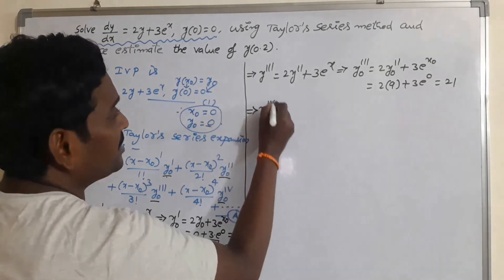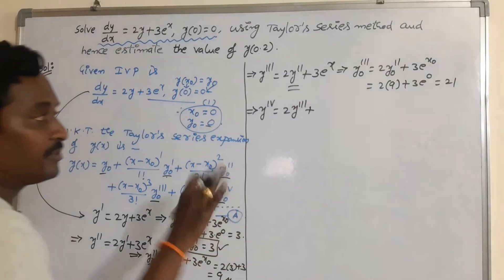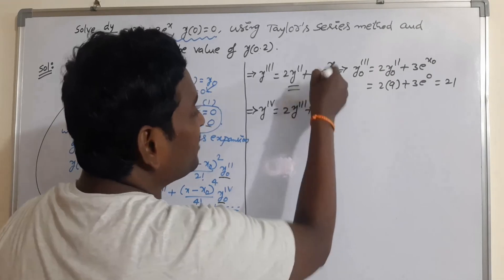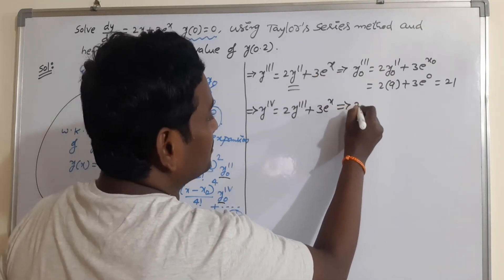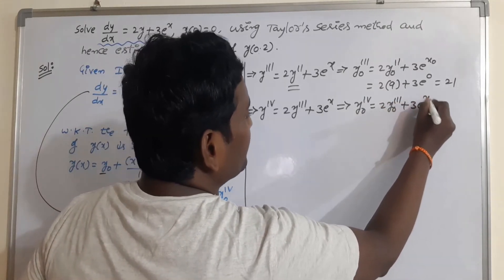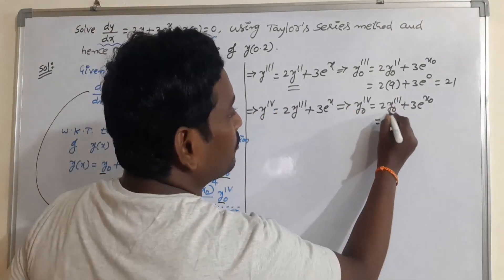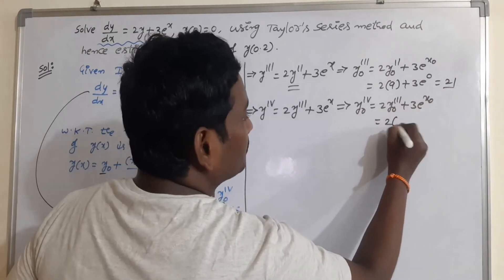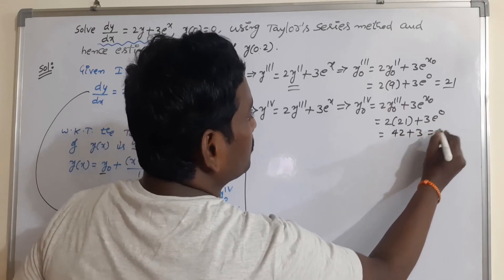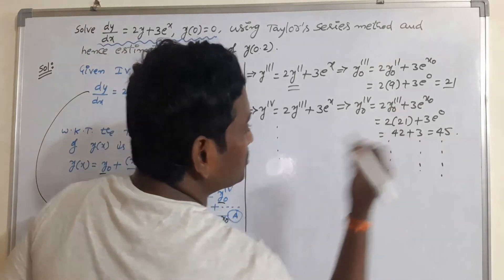Now calculate the fourth derivative: y'''' = 2y''' + 3e^x. So y₀'''' = 2y₀''' + 3e^(x₀). Replace the values: 2 times 21 plus 3 times e^0 = 42 + 3 = 45. Similarly, we can find all remaining derivatives.